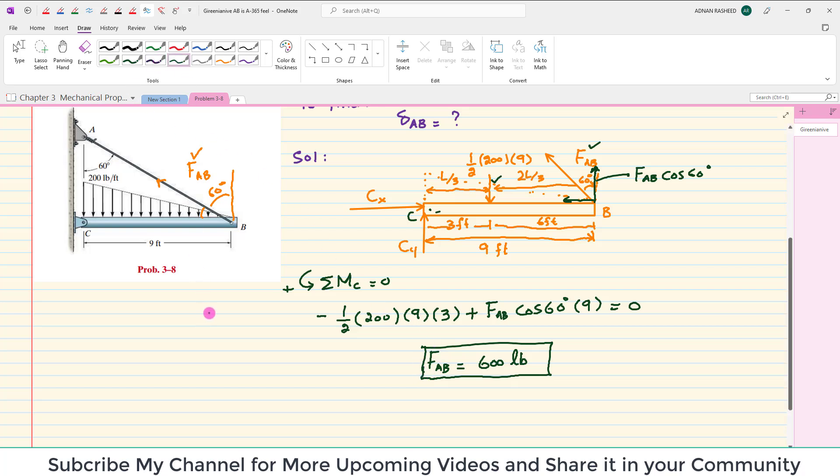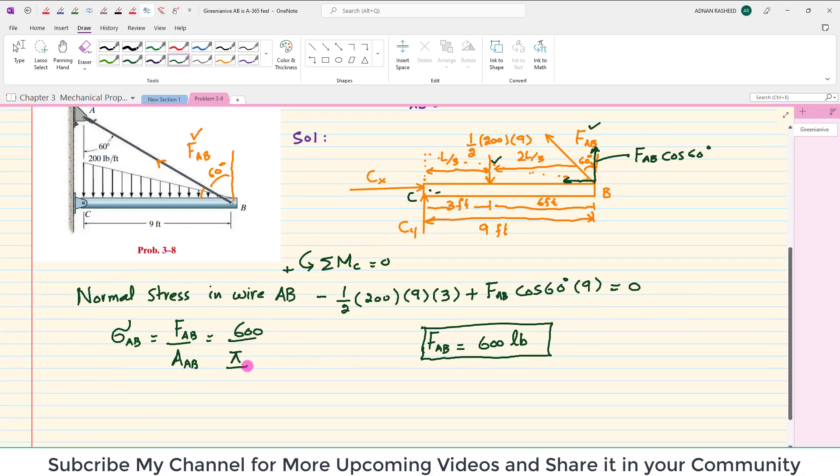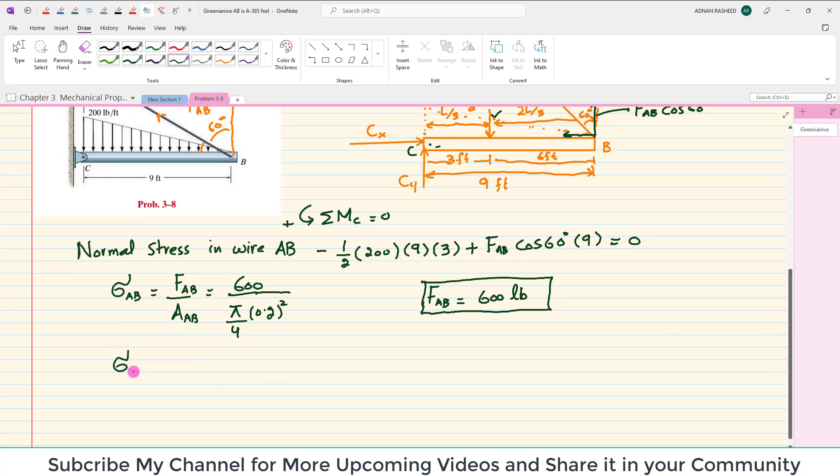Now, we know that normal stress in wire AB is equal to sigma AB which is equal to force AB divided by area of AB. We have force AB, we have diameter of wire, we can find it. 600 divided by area of this wire. This wire has diameter 0.2. You can find area which is equal to pi by 4 into 0.2 whole square. The stress in wire AB comes out to be 19.10 KSI.